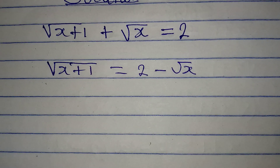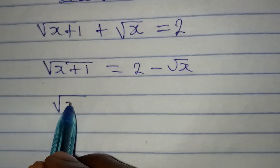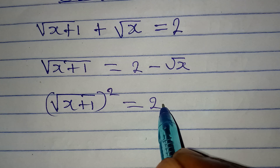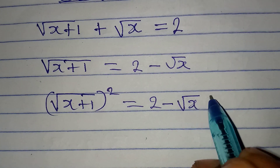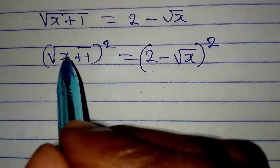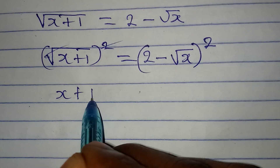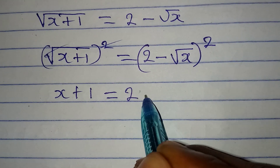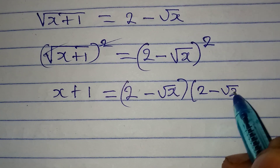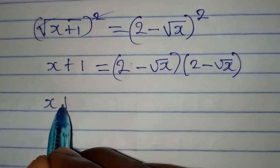The next thing I will do is to remove this square root by squaring both sides. So x plus 1, squared on the left, will be equal to 2 minus root x, all squared on the right. The square root and square will cancel each other on the left, giving us x plus 1.